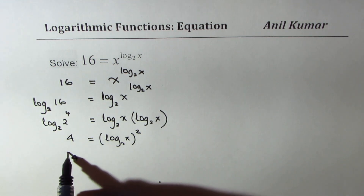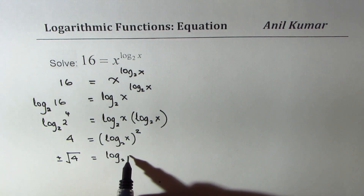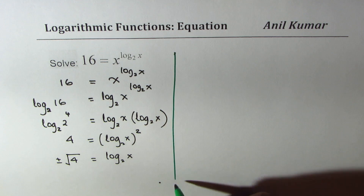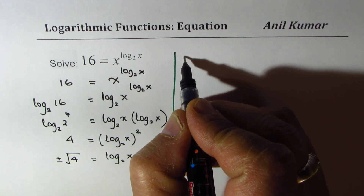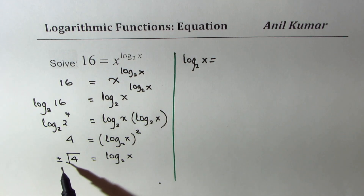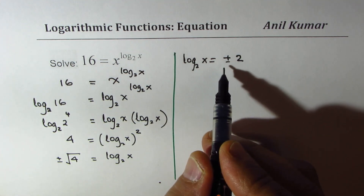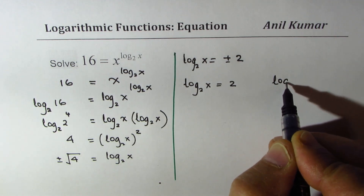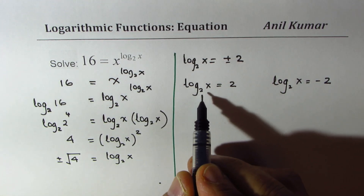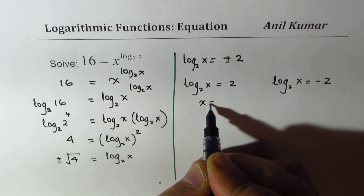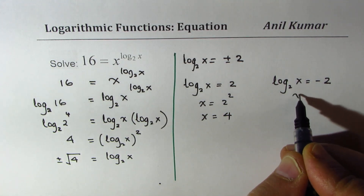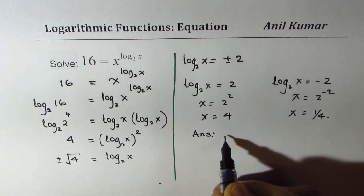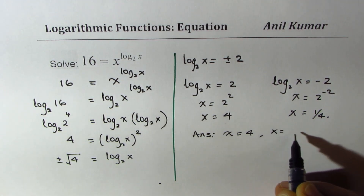Now if we take the square root, we get square root of 4 with a plus and minus, and we can find what log to the base 2 of x is. This results in two solutions. So log to the base 2 of x is equal to plus or minus 2. That gives us two solutions: log to the base 2 of x equals plus 2, and log to the base 2 of x equals minus 2. If plus 2 is the solution, x equals 2 squared, which means x equals 4. On the other side, x equals 2 to the power of minus 2, which means x equals 1 over 4.